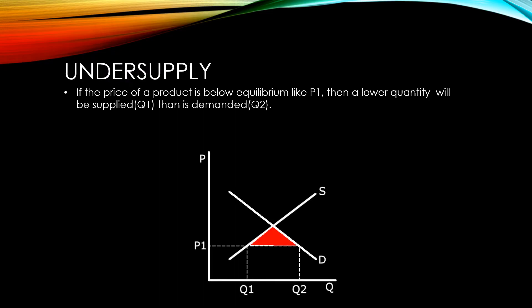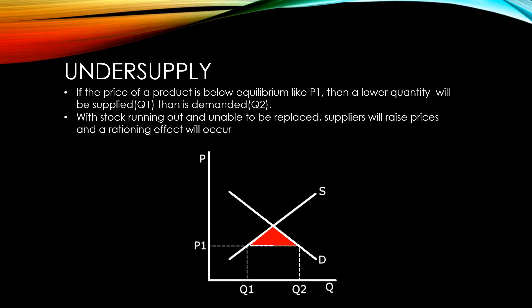On the other hand, if the price is set below equilibrium, like in this example, there will be a greater quantity demanded than what is supplied. With stock running out and unable to be replaced, suppliers will raise prices and a rationing effect will occur where we will move back towards equilibrium.